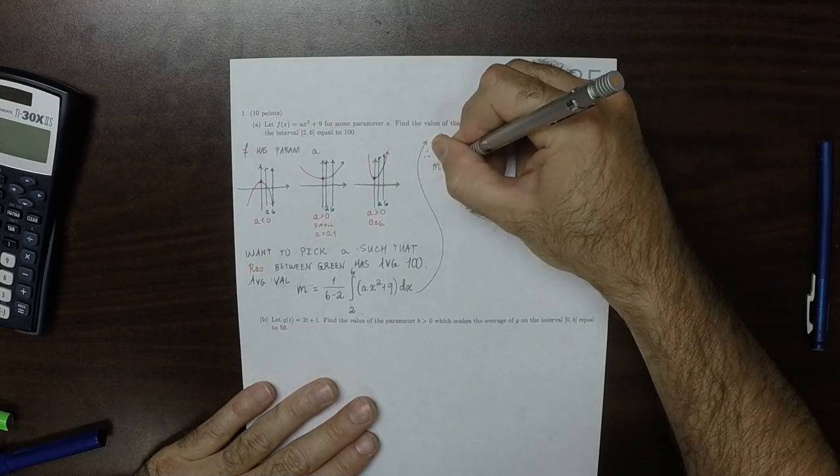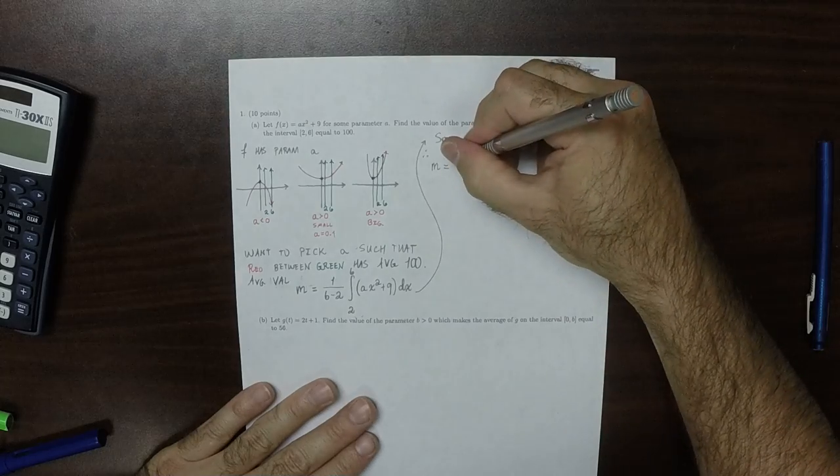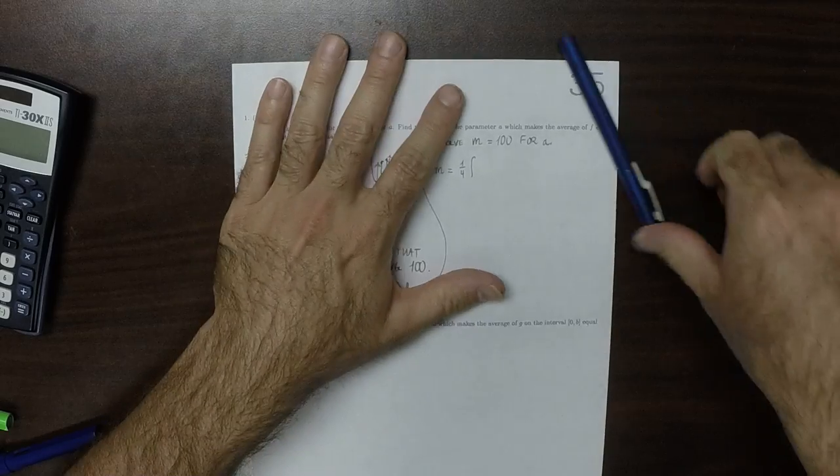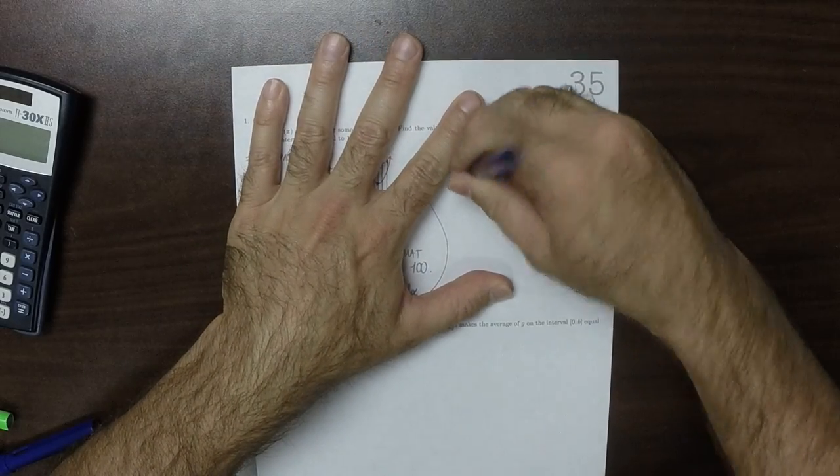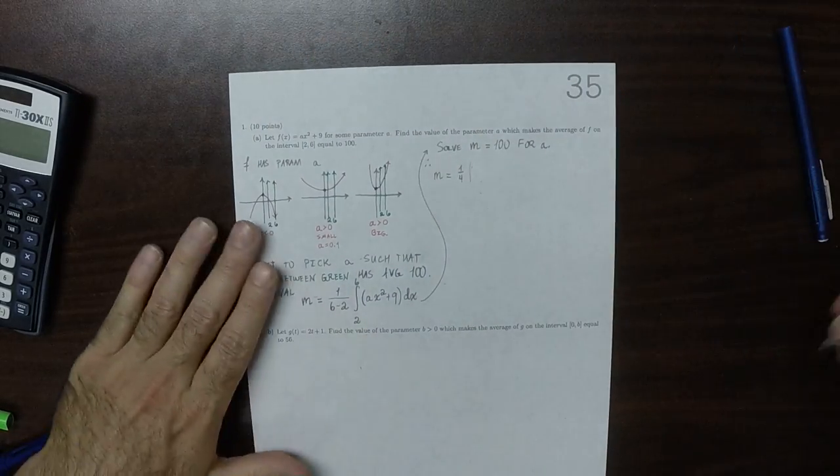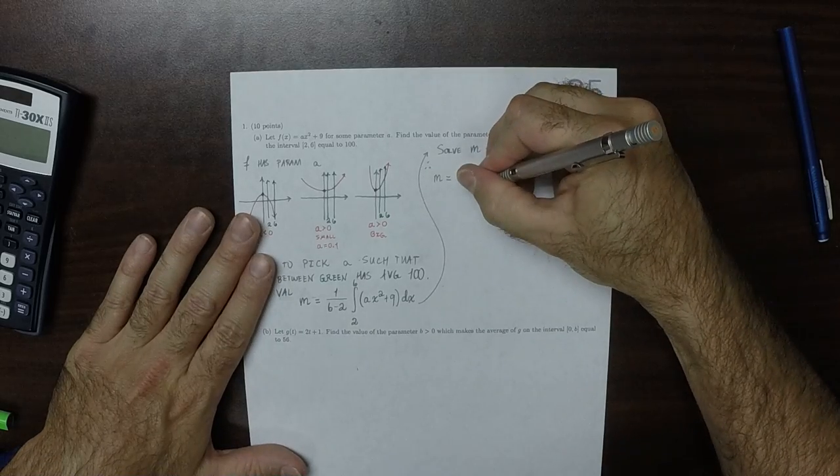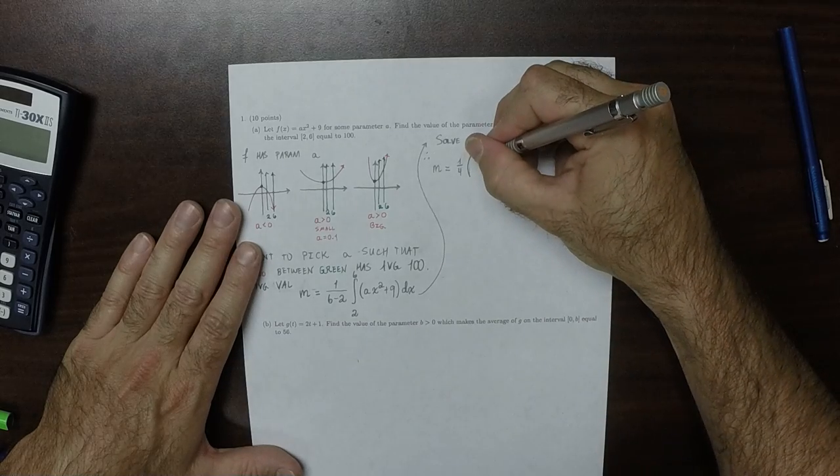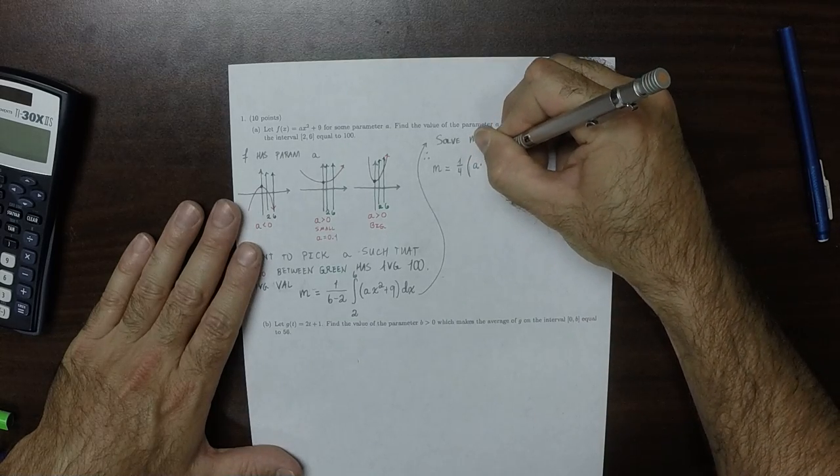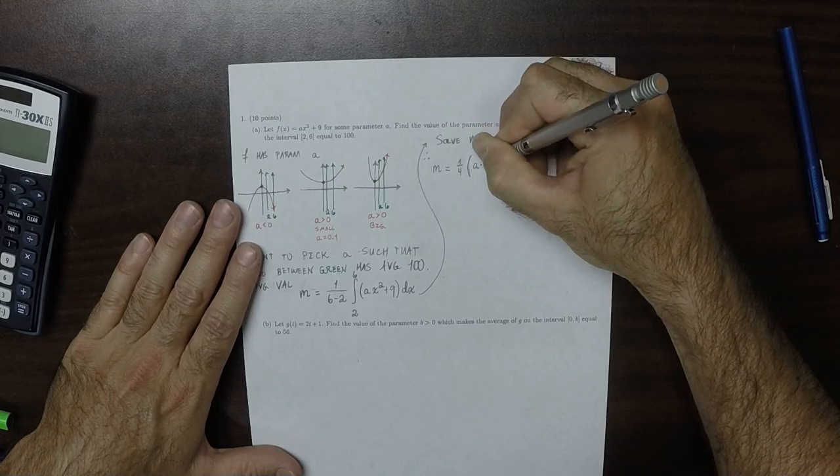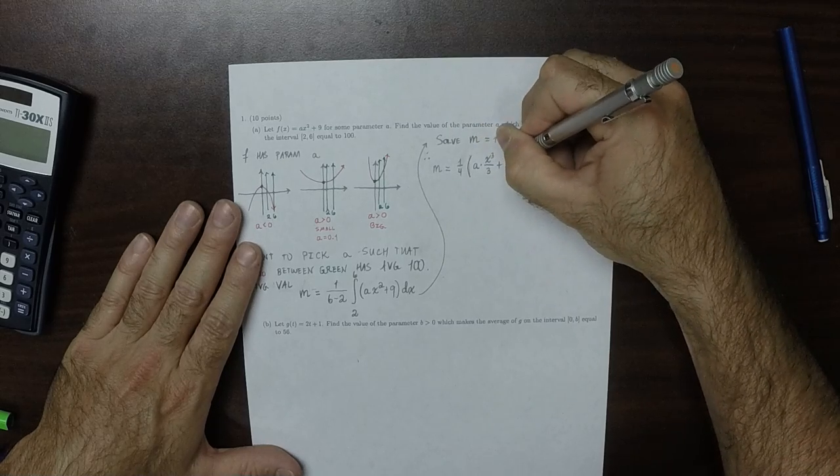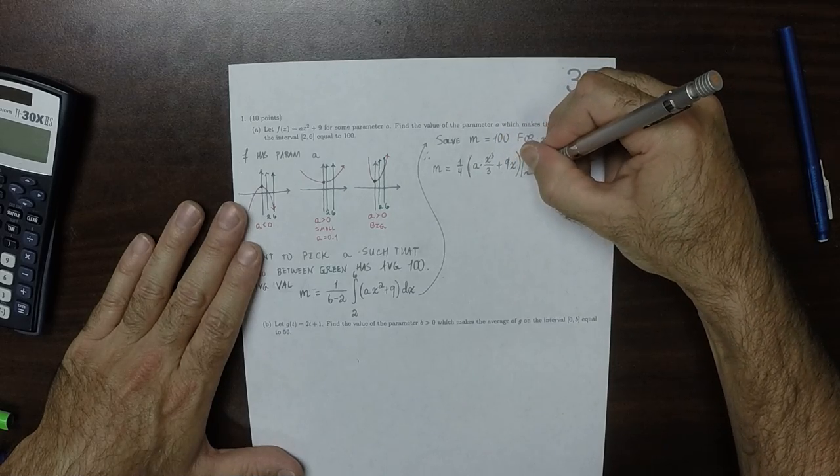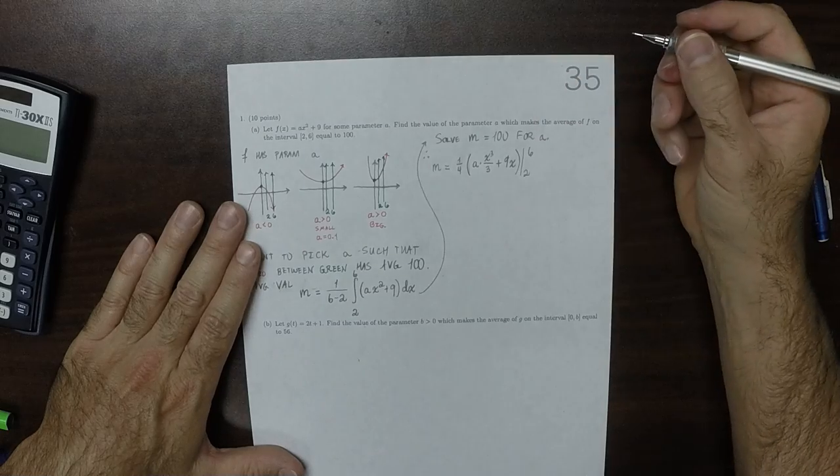m, that's 1 over 6 minus 2, so that's a fourth, and then I'll go ahead and integrate that with the fundamental theorem. Antiderivative of ax squared, that would be a multiplied by x cubed over 3, and then plus 9x, and then evaluate it from 2 to 6.